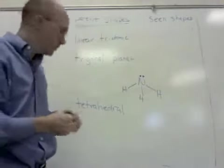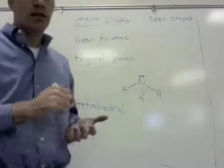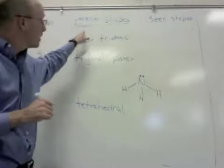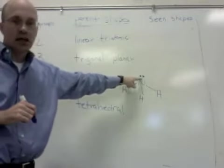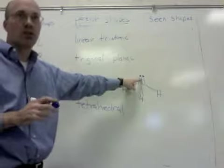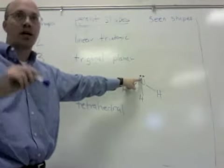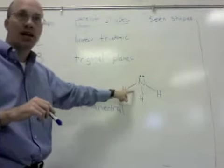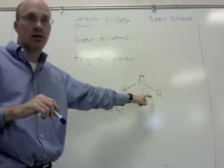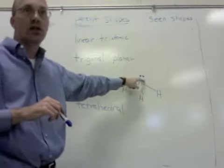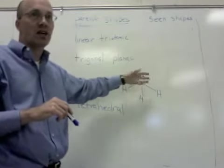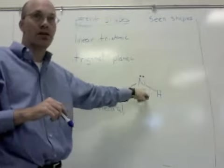So this is ammonia. And the thing is, an electron pair is just as much of an electron pair as the pairs that are in these bonds here. So you would count this as a group just like you would count these guys as a group.